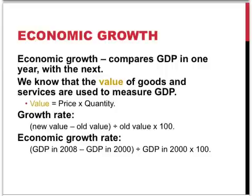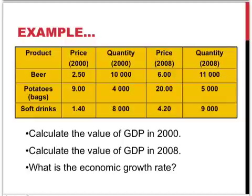In this example of economic growth rates, we'll look at the GDP in 2008, subtract the GDP in the year 2000, and divide that answer by the GDP in the year 2000, multiplying that with 100. In this example, we have an economy that produces beer, potatoes, and soft drinks, and we have the prices and quantities for these products in the year 2000 and the year 2008.